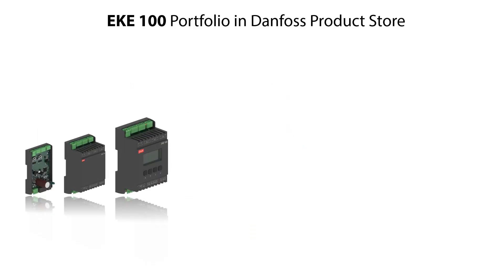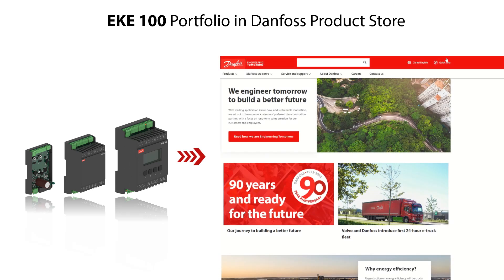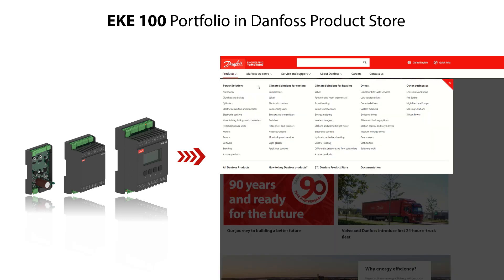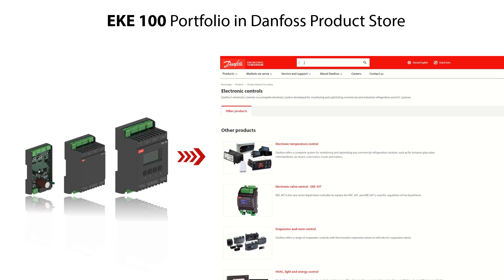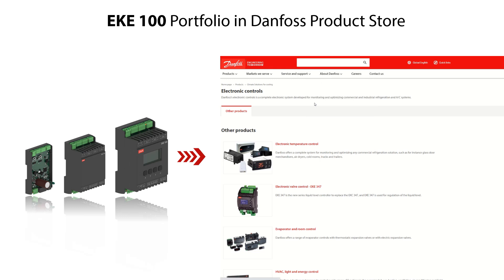You can find and select online the suitable EKE100 variants and related information by using the Danfoss product store. Go to Danfoss.com and select products, then select climate solutions for cooling and electronic controls, or enter EKE100 in the search field. From here you can select given EKE100 variants and code numbers and search for other information and documents such as datasheet, installation guide, user guide, and visuals.